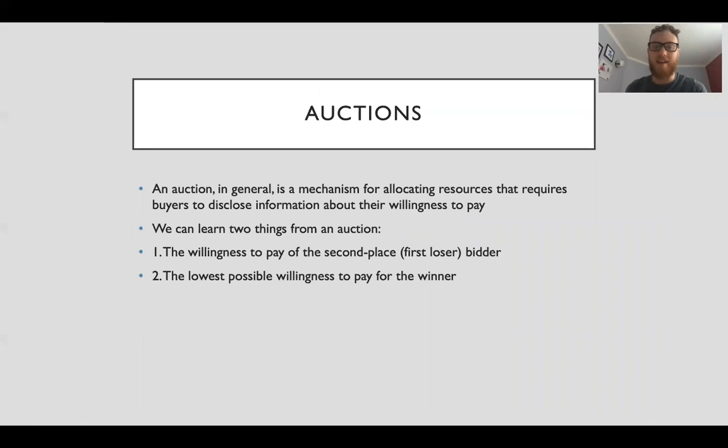I'm gonna talk really quickly about auctions. An auction in general is a mechanism for allocating resources that requires buyers to disclose information about their willingness to pay. We can learn two things from an auction: one, the willingness to pay of the second place bidder or the first guy who stopped bidding against the eventual winner, the first loser. Two, the lowest possible willingness to pay for the winner.